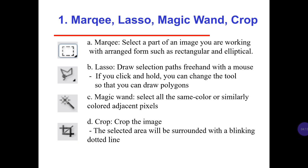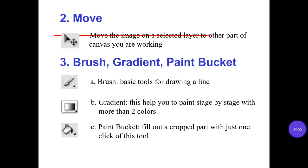First: Marquee, Lasso, Magic Wand, and Crop. A: Marquee — select a part of an image with arranged forms such as rectangular and elliptical. B: Lasso — draw a selection path freehand with a mouse; if you click and hold, you can change the tools to draw a polygon. C: Magic Wand — select all the same color or similar color at jagged pixels. D: Crop — crop the image. The selected area will be surrounded with a blinking dotted line. Number 2: Move — move the image on a selected layer to another part of the canvas.